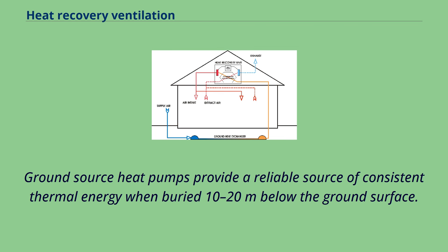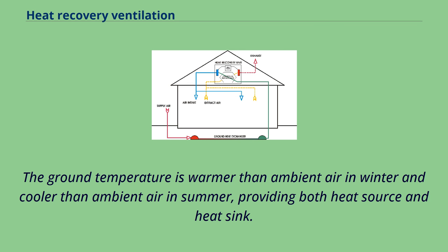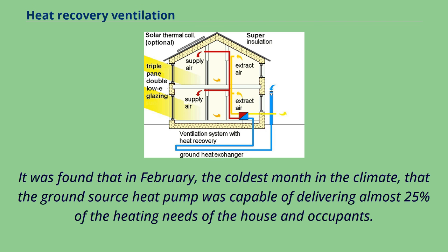Ground source heat pumps provide a reliable source of consistent thermal energy when buried 10 to 20 meters below the ground surface. The ground temperature is warmer than ambient air in winter and cooler than ambient air in summer, providing both a heat source and heat sink. It was found that in February, the coldest month in the climate, the ground source heat pump was capable of delivering almost 25% of the heating needs of the house and occupants.